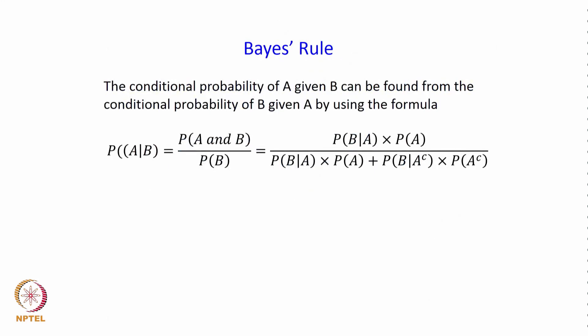We also have the very important Bayes' rule. The conditional probability of A given B can be found from the conditional probability of B given A using: P(A|B) = P(A and B)/P(B), which expands to P(B|A)·P(A) divided by [P(B|A)·P(A) + P(B|Aᶜ)·P(Aᶜ)]. Here P(B) is expanded by the total probability formula, and P(A and B) is substituted using the multiplication rule.